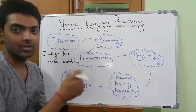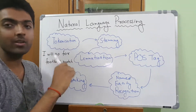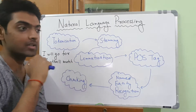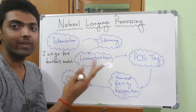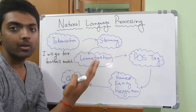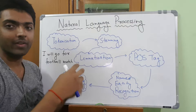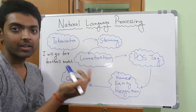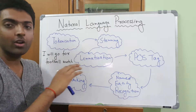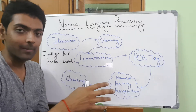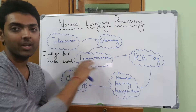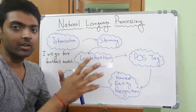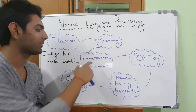The third part is lemmatization. Lemmatization converts, for example: 'I will go for football match,' 'I went for football match,' 'I'm going for football match.' The words 'go,' 'went,' and 'going' or 'gone' are all derived from 'go.' So if I see 'went,' the meaning of the sentence should not really change — it's still the same. Lemmatization converts words which are very similar to each other into one original word.